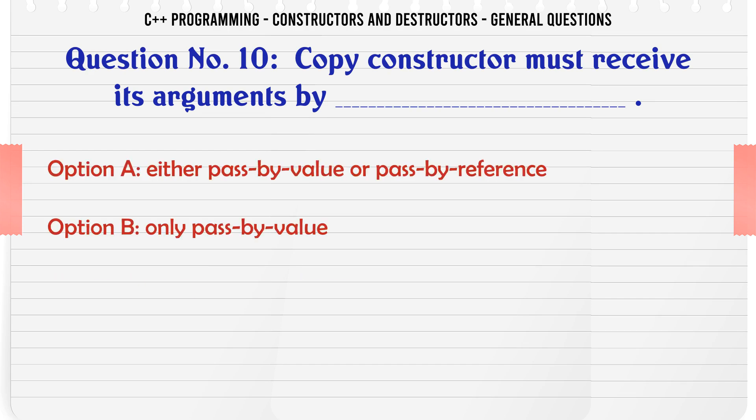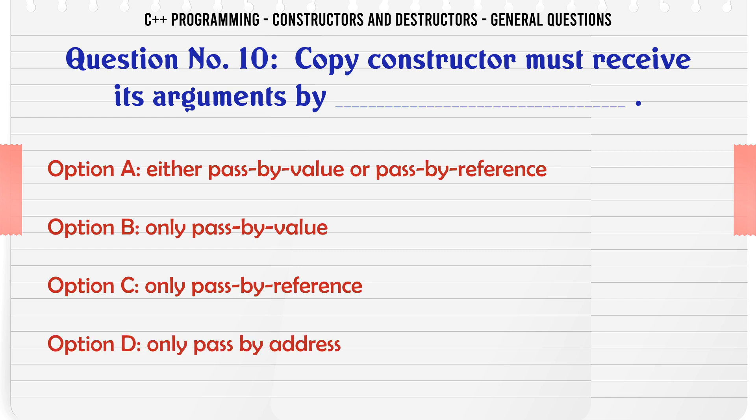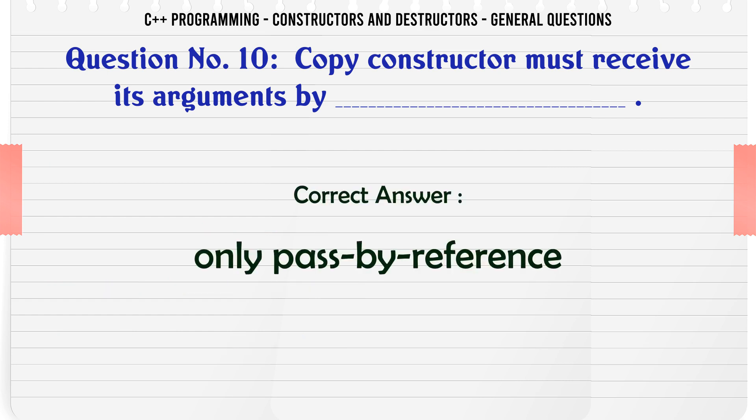Copy constructor must receive its arguments by: A. Either pass by value or pass by reference. B. Only pass by value. C. Only pass by reference. D. Only pass by address. The correct answer is Only pass by reference.